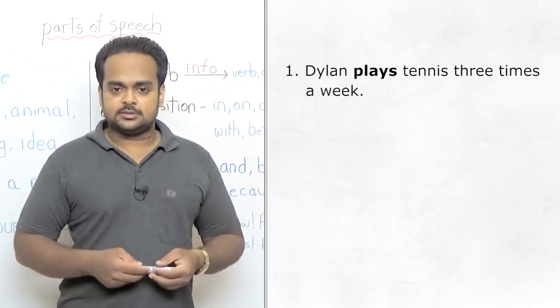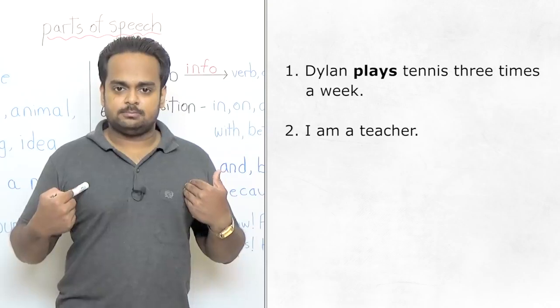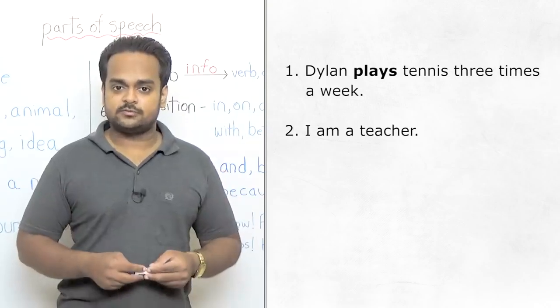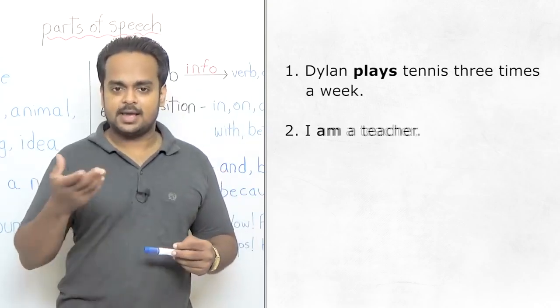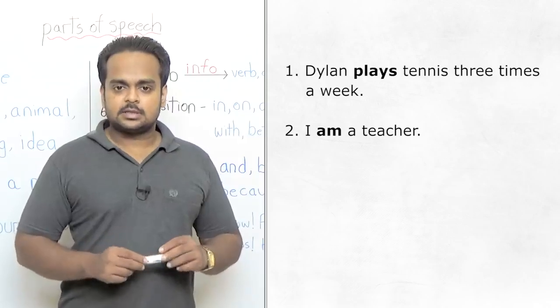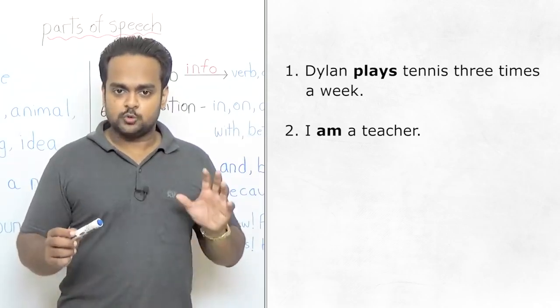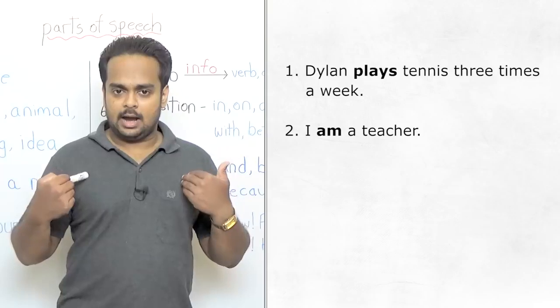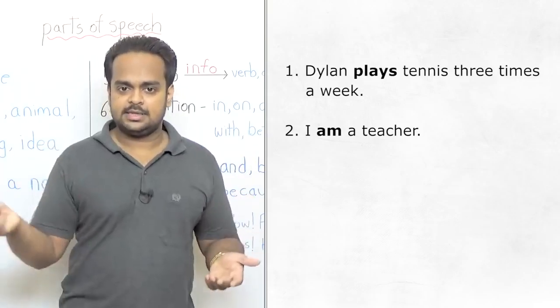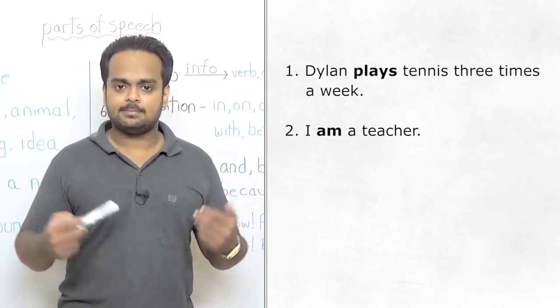In this next sentence, I am a teacher. Can you tell me which is the verb? The verb is am. That's basically just the verb be or to be, but we say I am, you are, he is, etc. So I am a teacher.